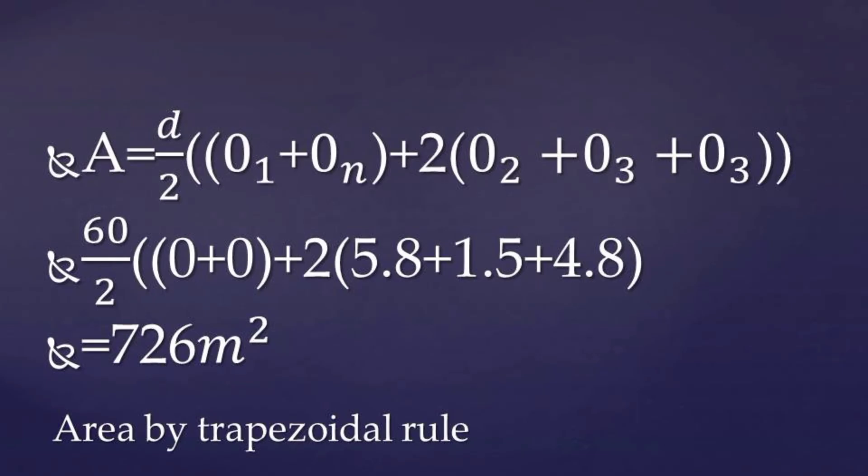Let's go ahead. So the area by trapezoidal rule: trapezoidal rule is d over 2 into brackets, the first offset plus the last offset. In this case our last offset is zero. And then plus 2 multiplied by the sum of the remaining offsets.